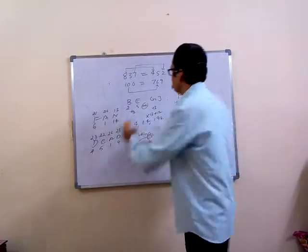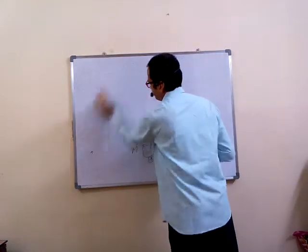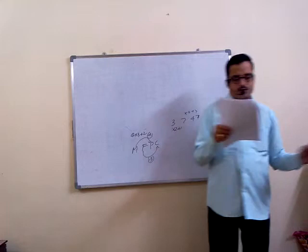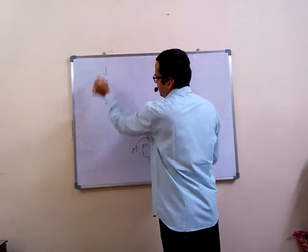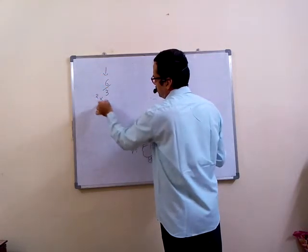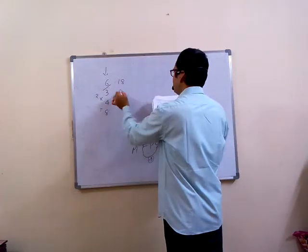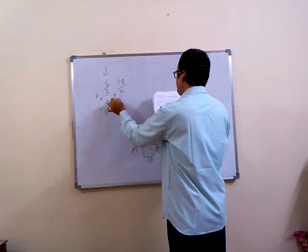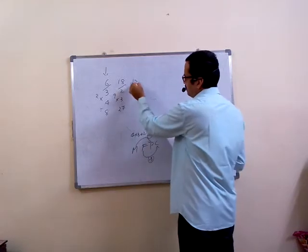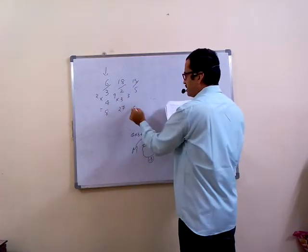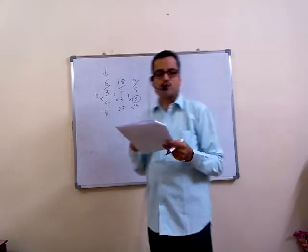Fourteenth, based on missing number. Column-wise operation. 6 divided by 3 equals 2, 2 into 4 is equal to 8. In the same way, 18 divided by 2 equals 9, 9 into 3 equals 27. In the same way, 15 divided by 5 equals 3, 9 into 3 - the answer is 3. Fourteenth question, third option.